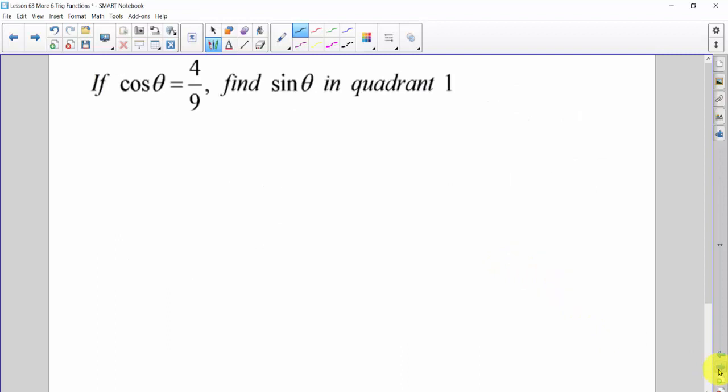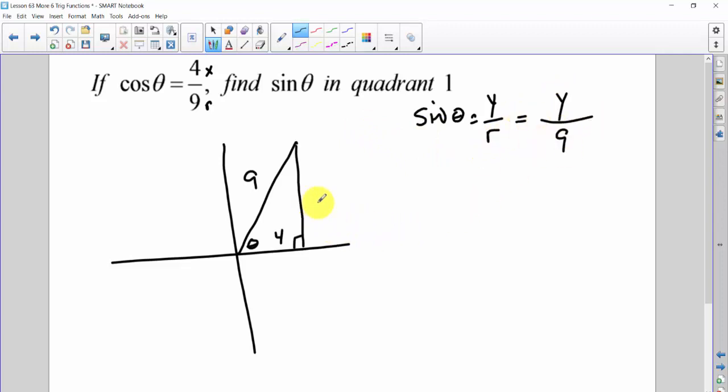Now, there are a couple of different ways to do this problem. I am a fan of saying, okay, well, if I know the cosine, then I know, basically, the r value and the x value. So I'm taking it off a unit circle and just making a triangle out of it. And I'll do this pretty much on all these guys. So here's my r of 9. Here's my x of 4. I've got some angle theta. And I'm in quadrant 1, as it says. And so if I want the sine, I'm going to need the y over the r. I've got the r already.